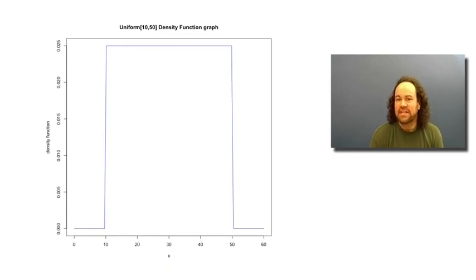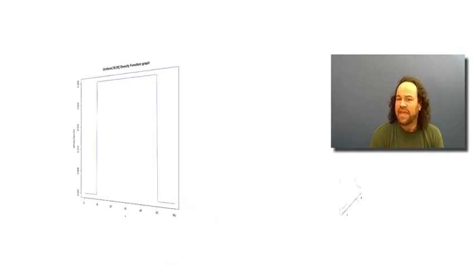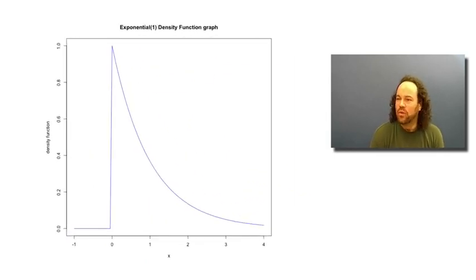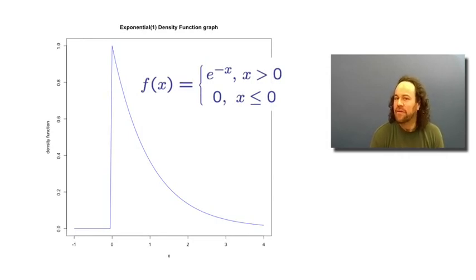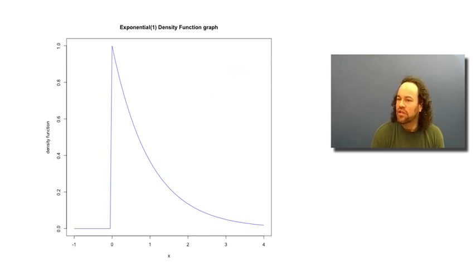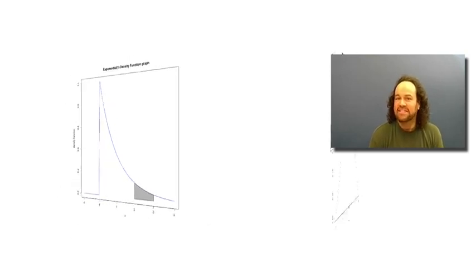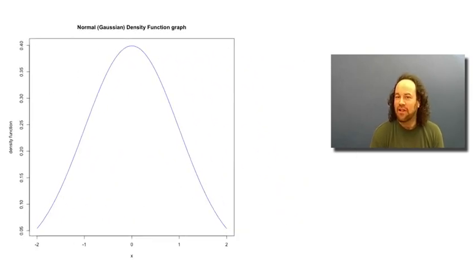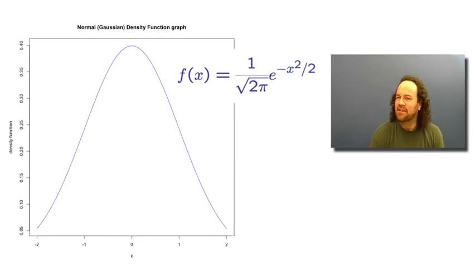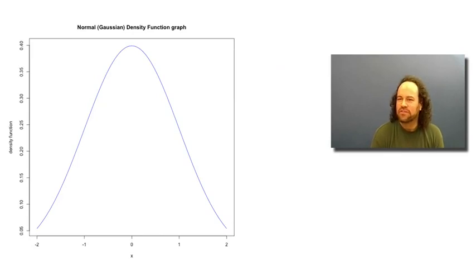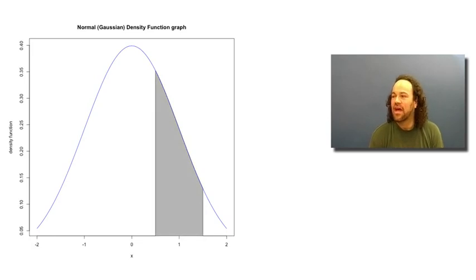Other density functions give us other continuous probability distributions. The exponential(1) distribution has a density function equal to e^(-x) whenever x is positive and 0 otherwise. The probability that the random variable is between 2 and 3 equals the area of the shaded region underneath that graph. The single most important continuous distribution we'll study is the normal distribution, also called the Gaussian distribution or bell curve, with density given by (1/√(2π)) × e^(-x²/2).